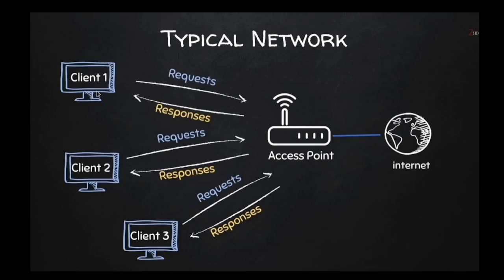For example, this device — a laptop or smartphone — wants to access the internet. It sends a request to the access point, which forwards that request to the internet, then waits for a response and sends it back to the device. All three devices must send their requests through this access point, which initiates a session between them and the internet. Essentially, this access point is viewing all of the requests and responses being transferred across the network.